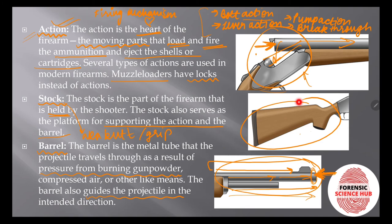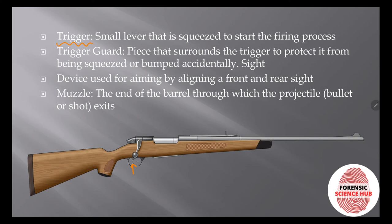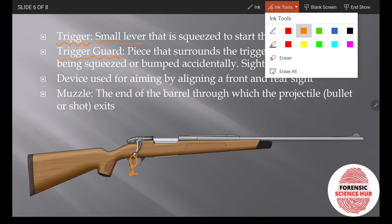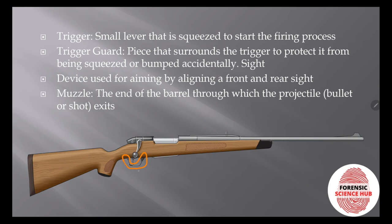Next comes the trigger. The trigger is a small lever that is squeezed or pulled to start the firing process. Once you pull the trigger, it initiates the entire firing process. There is also a trigger guard to protect the trigger, preventing accidental trigger pulls and keeping the firearm from firing accidentally.